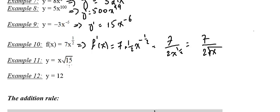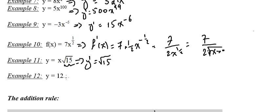Example 11: we also have a condition here — x should be positive — because when we rewrite a fractional exponent as a radical with index 2, the radicand must be positive. y equals x times the square root of 15. This is of the form k times x, where k is a constant, so the derivative is directly the constant. And y equal to a constant gives derivative 0.